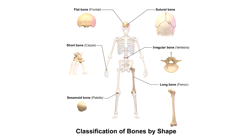The last type of bone we're going to talk about today are sutural bones. These are small, flat, and irregular shaped, and you'll find sutural bones usually between the flat bones of the skull. They have varying shapes and sizes.